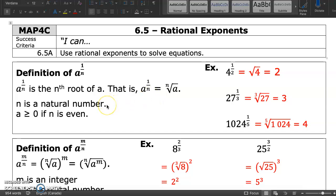n is a natural number, meaning it's a positive value: 1, 2, 3, 4, so on. a is greater than or equal to 0 if n is even.